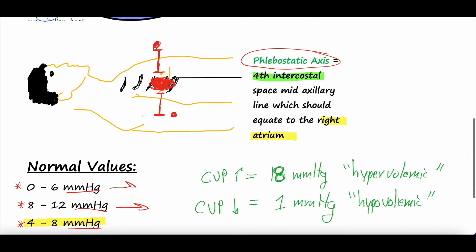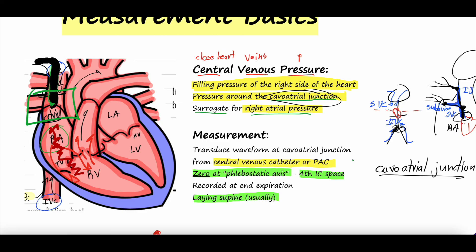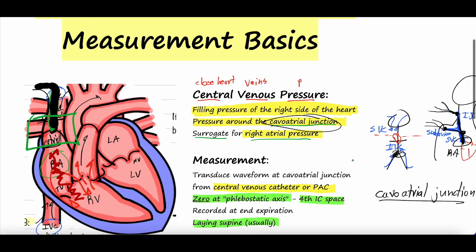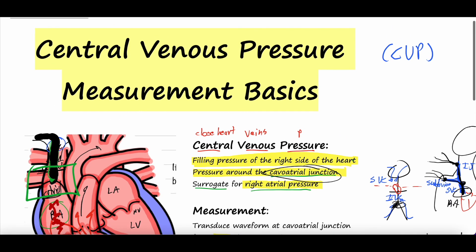That covers the basics of central venous pressure measurements — how to obtain them, how to zero at the phlebostatic axis, what normal values are, and a brief look at what abnormal values might mean and why. Let us know your thoughts, comments, and questions below. Subscribe and hit the bell button. Check out our Patreon page if you're interested. Stay well, keep learning — we'll see you next time.